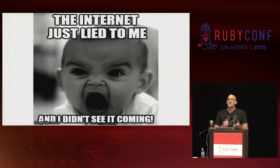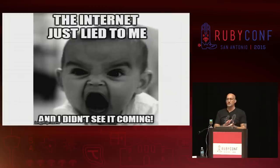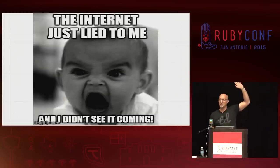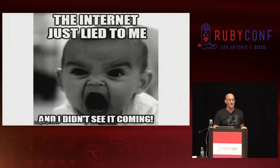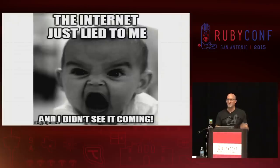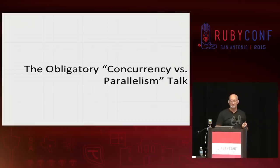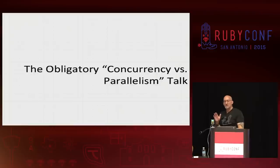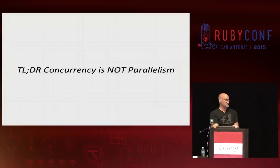Apparently the internet lied to me. I did not see that coming — well, actually I did see it coming because I know what's going on. But let me ask you this: was there anybody here that was surprised to see MRI Ruby perform that concurrently that fast? Thank you very much for being honest. So let's actually talk about why that is. How many people would like to see a ten times performance improvement in their applications? Everybody in the room should say that. So let's explain why — because that really goes against the storyline we're hearing all the time. We're going to start by talking about the obligatory concurrency versus parallelism discussion. Concurrency is not parallelism. Too long, didn't read: concurrency is not parallelism.